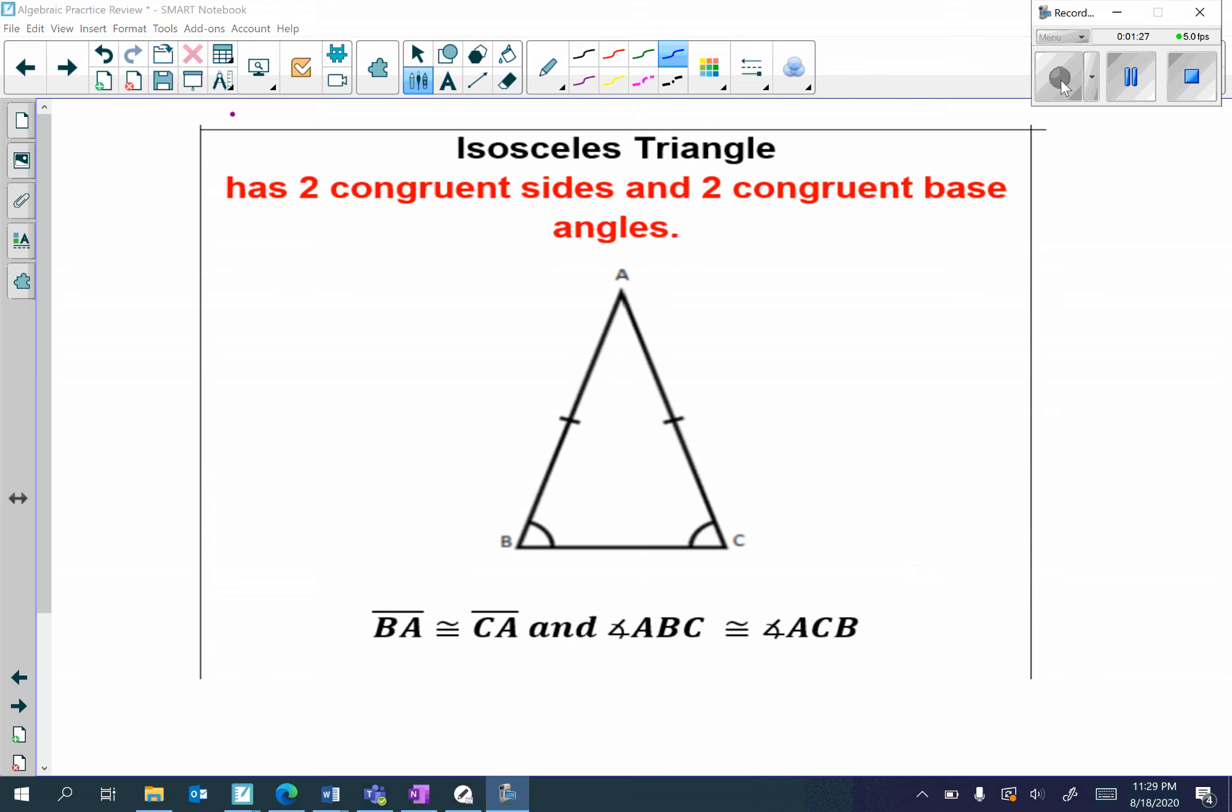Next, we have an isosceles triangle. An isosceles triangle has two congruent sides and two congruent base angles. So, for example, I have the congruent sides. BA is congruent to CA.